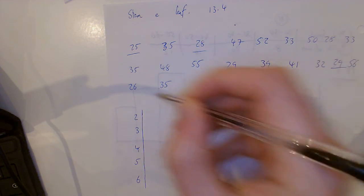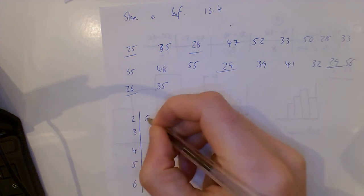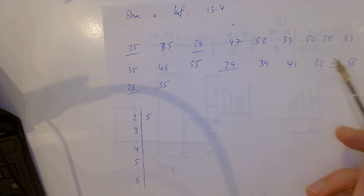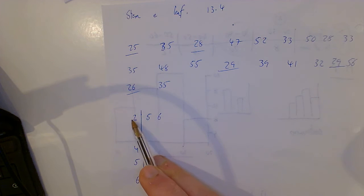My lowest one's 25, then 26. We don't write 2 every time, it's 2|5, 2|6. That's what the line means, so that's 25, 26.